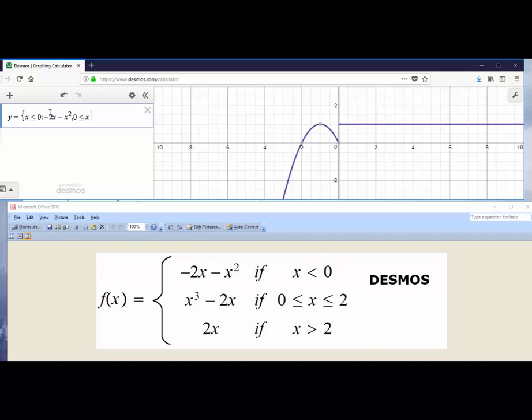So here we have 0 is less than or equal to x is less than or equal to 2. Then we'll put a semicolon and then write the expression x cube minus 2x.